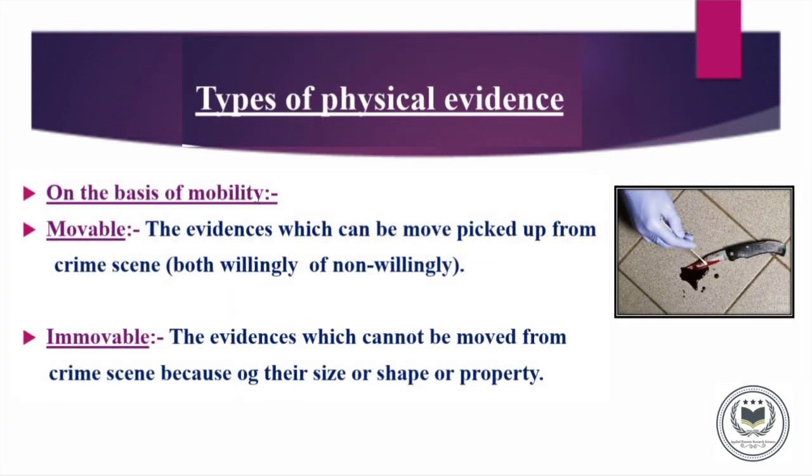We can classify Physical Evidences on the basis of many criteria. First, we are going to discuss types of Physical Evidences on the basis of Mobility. There are two types: Moveable and Immovable. The Moveable kind of Physical Evidences are generally small in size, therefore they can be precisely picked up both willingly or non-willingly from the Crime Scene.